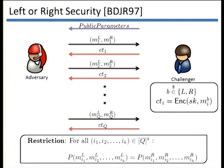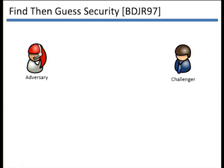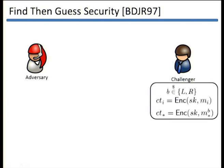Our main goal is to build practical schemes that satisfy this security notion. However, this notion has many challenge pairs, so we also considered a simpler security notion introduced in the same work — called find-then-guess security, or single-challenge security — which has only one challenge pair. The challenger picks the side B, and the adversary is allowed to make single-message queries first.